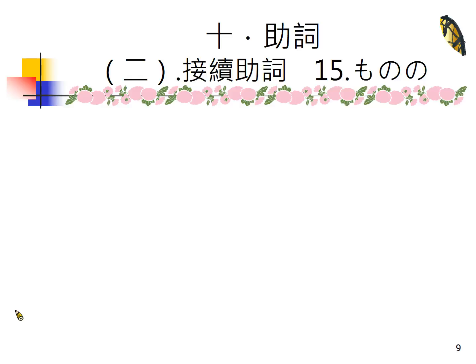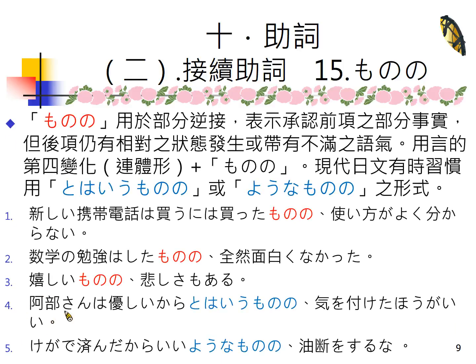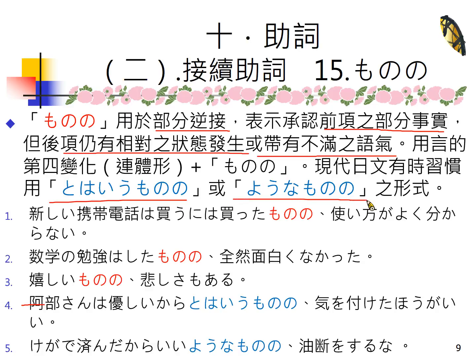くせに是「怎么样却怎么样」，以く开头所以用连接名词的方式来接它，但它跟のに不一样的地方是它带有责难、责怪的语气。好，今天我们要讲的ものの——ものの其实是用于部分逆接。部分逆接表示承认前项的部分事实，但是后项有相对的状态发生，或者是带有不满的语气。ものの用言的第四变化连体型来接它，那现在日文有时候习惯用「とはいうものの」或者是「ようなものの」的形式。